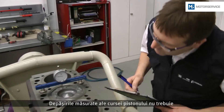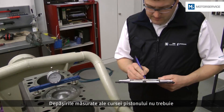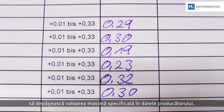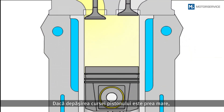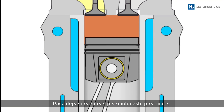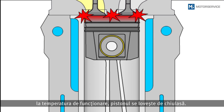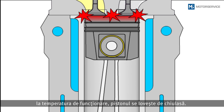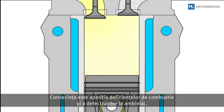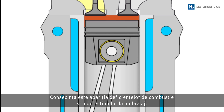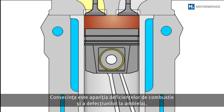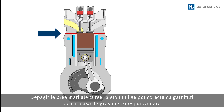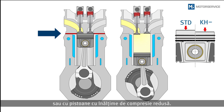The measured piston protrusions must not exceed the maximum values of the manufacturer's specifications. If the piston protrusion is too large, the piston bumps against the cylinder head once it has reached operating temperature. This results in combustion errors and damage to the crank mechanism.